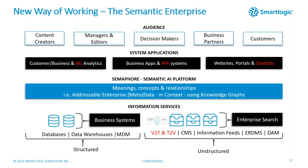In the new way of working, Semaphore's job is to add a semantic AI layer — a platform where meanings, concepts, and relationships for the whole enterprise are in one addressable enterprise resource. All system applications have one place to go for meanings, concepts, and relationships to get context. New types of applications highlighted include chatbots — essentially an extension of the customer experience alongside websites and portals — plus robotic process automation, machine learning analytics, and voice-to-text.